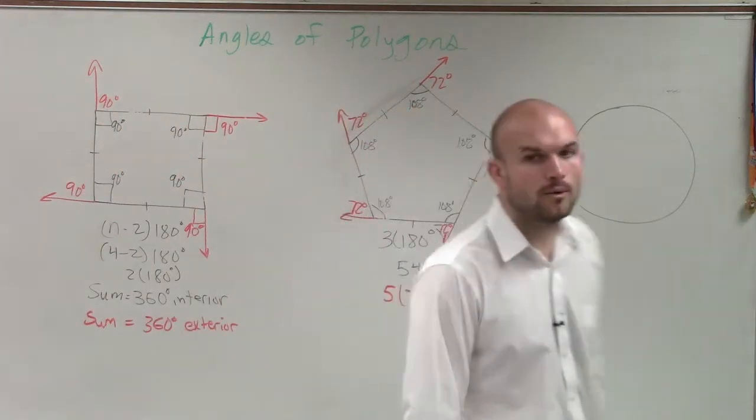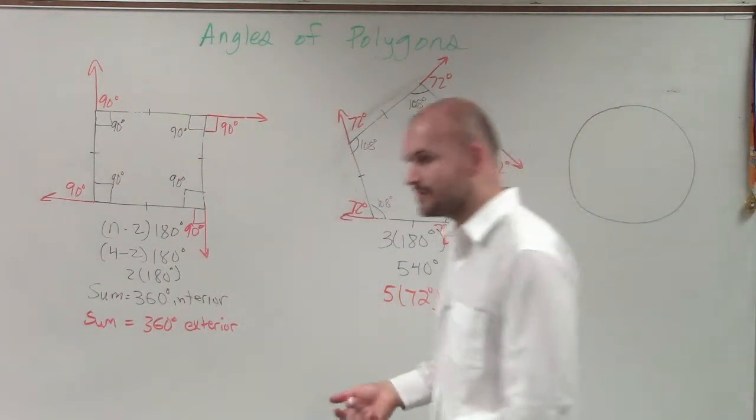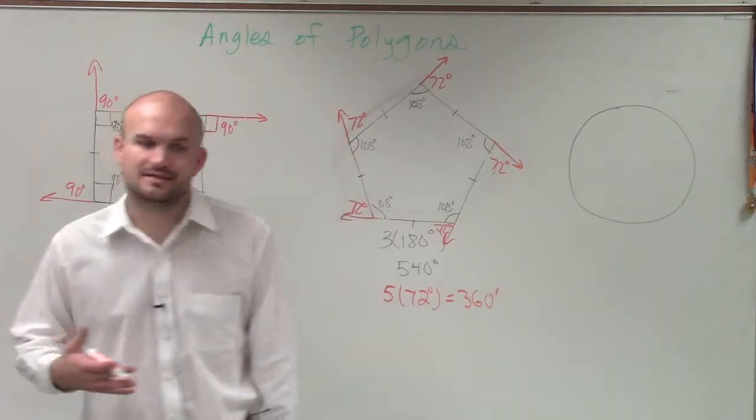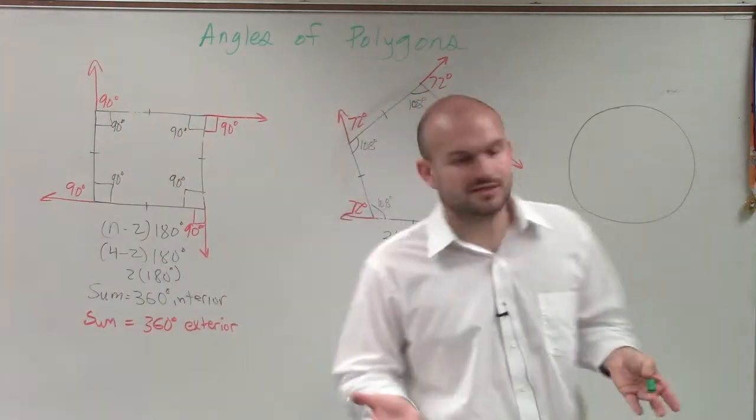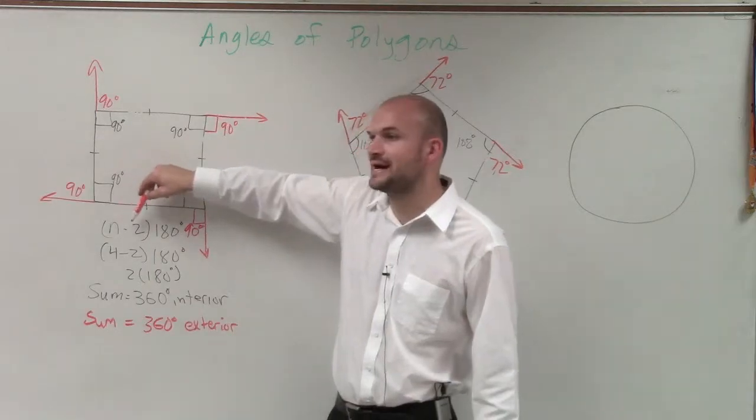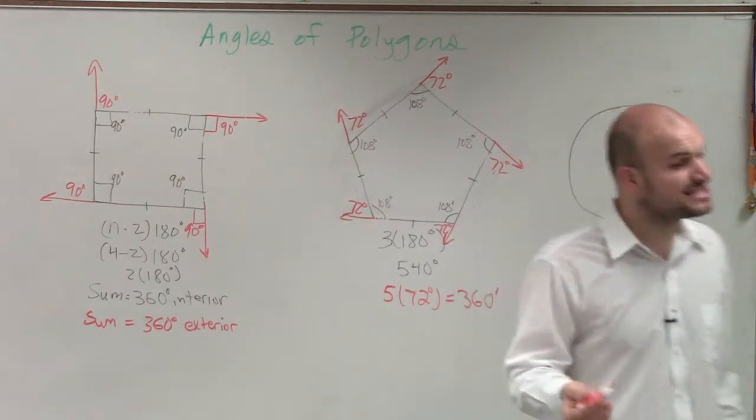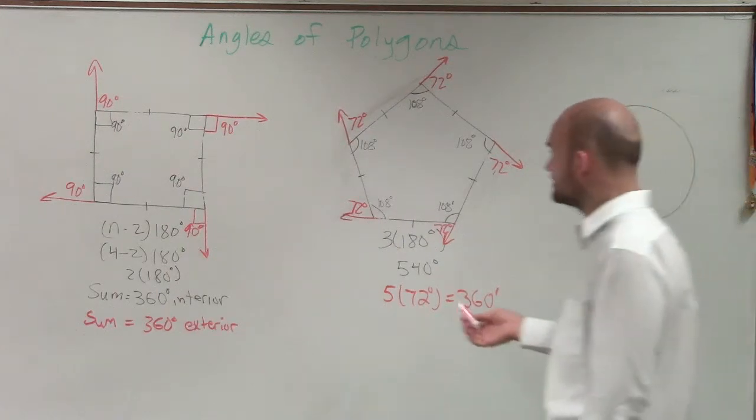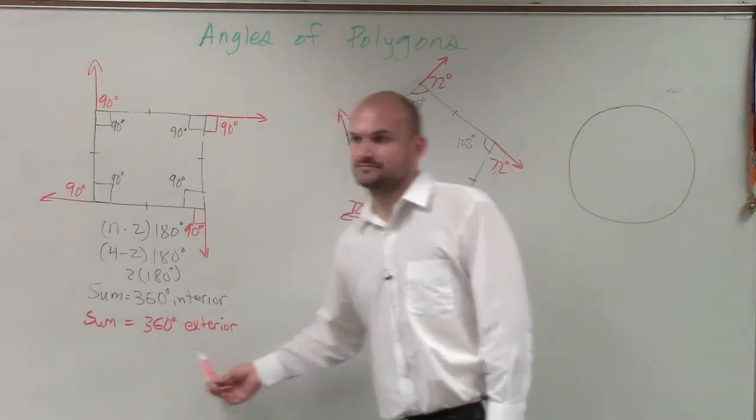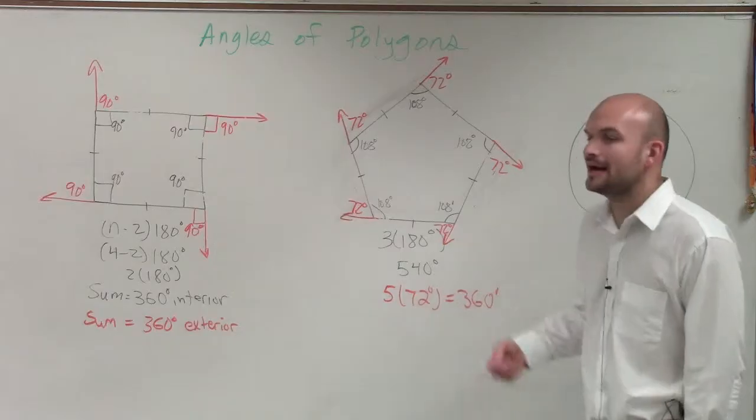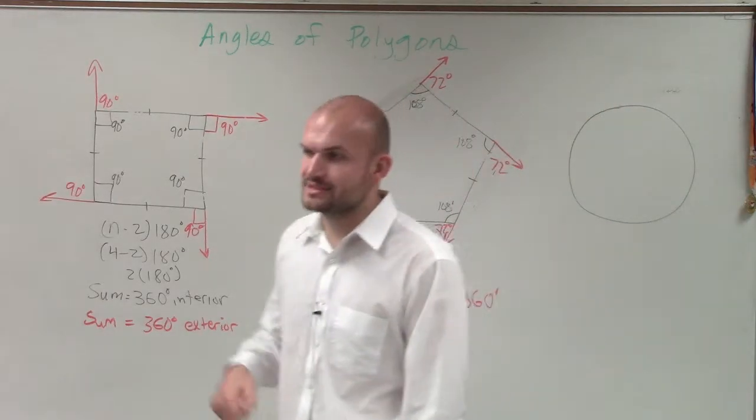So what I'd like you guys to understand from this is that the sum of the interior angles is always going to be the number of sides minus 2 times 180. However, the sum of all the exterior angles is always going to equal 360. And that, again, brings us to our point.